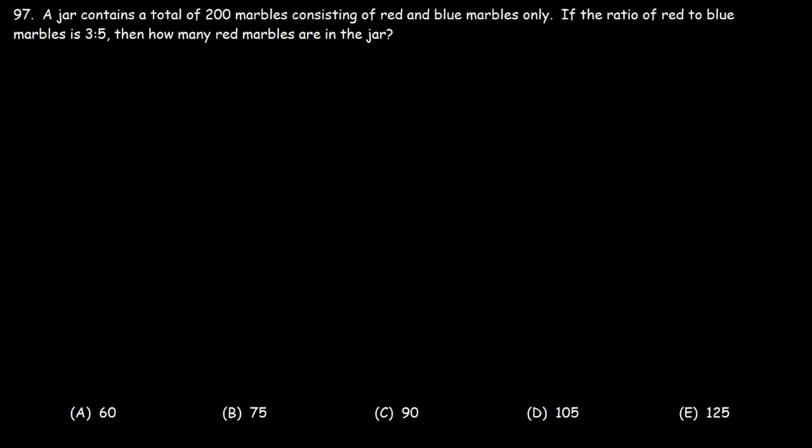97. A jar contains a total of 200 marbles, consisting of red and blue marbles only. If the ratio of red to blue marbles is 3 to 5, then how many red marbles are in the jar?